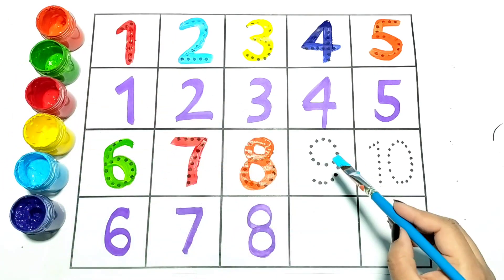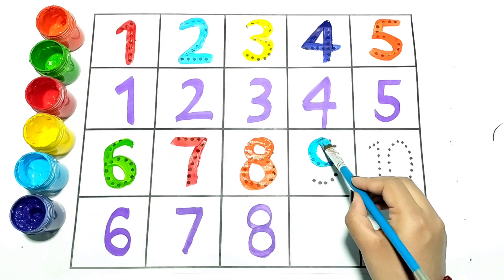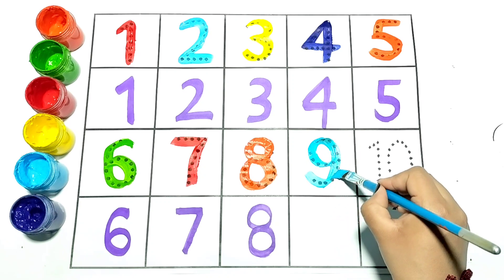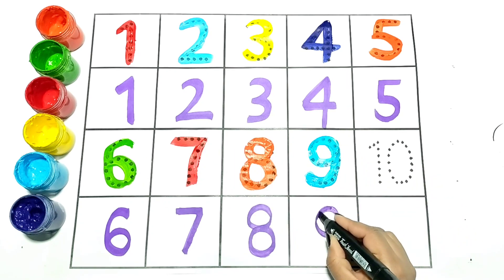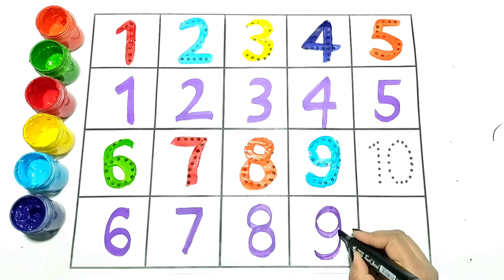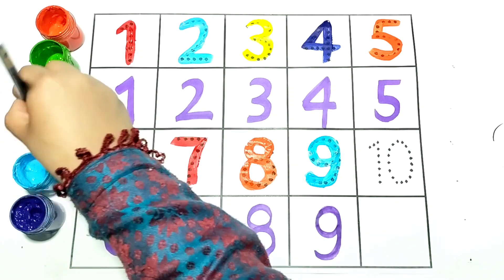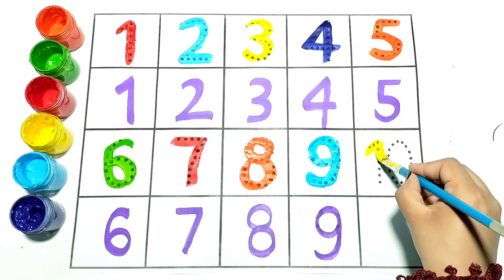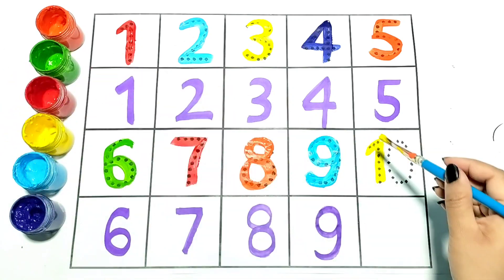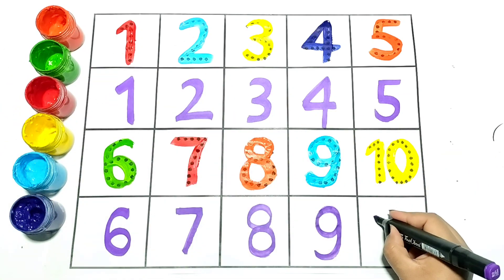Nine, now I am writing nine. It is in blue color. Blue. Next number is ten. Kids repeat with me.